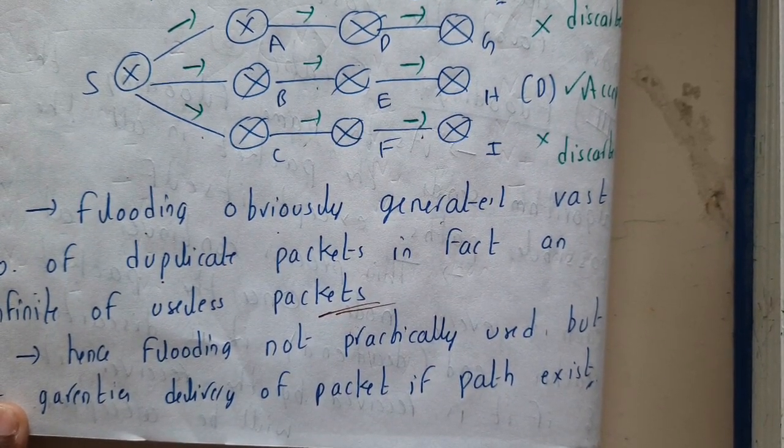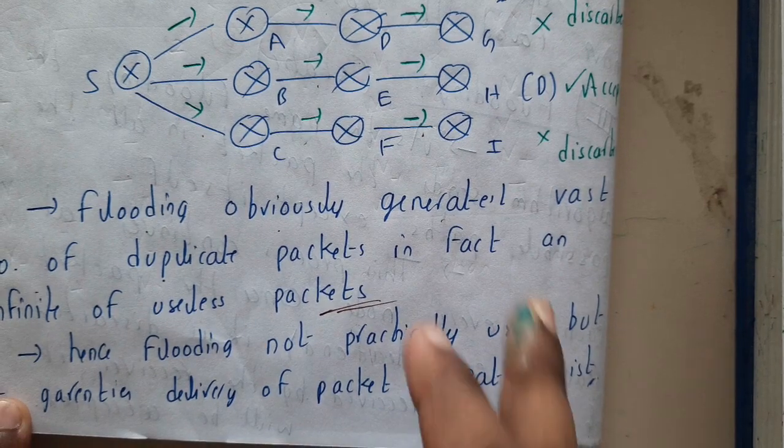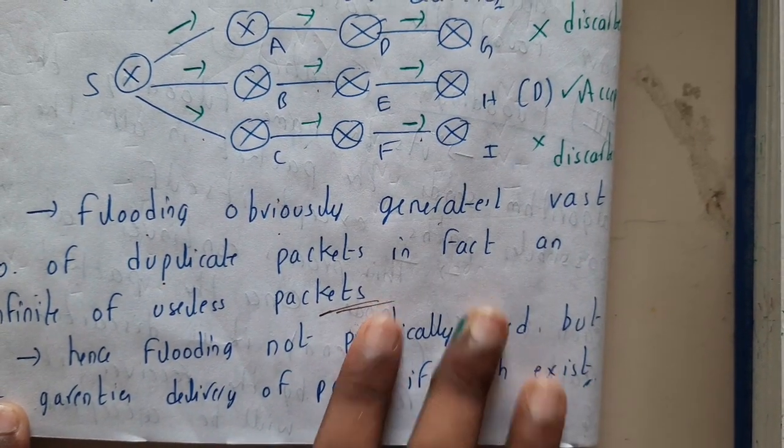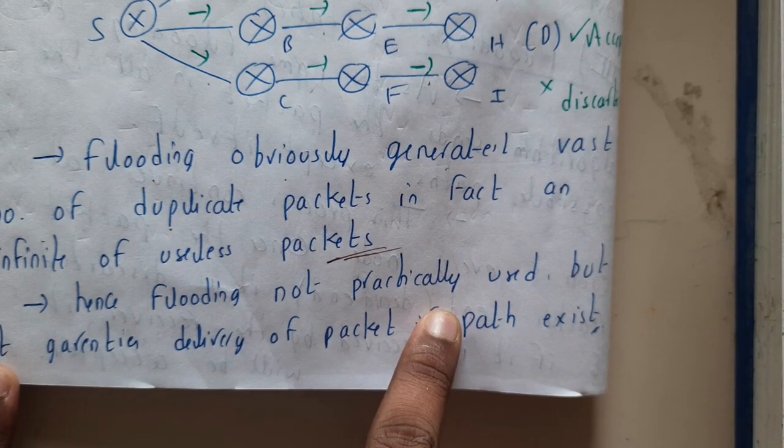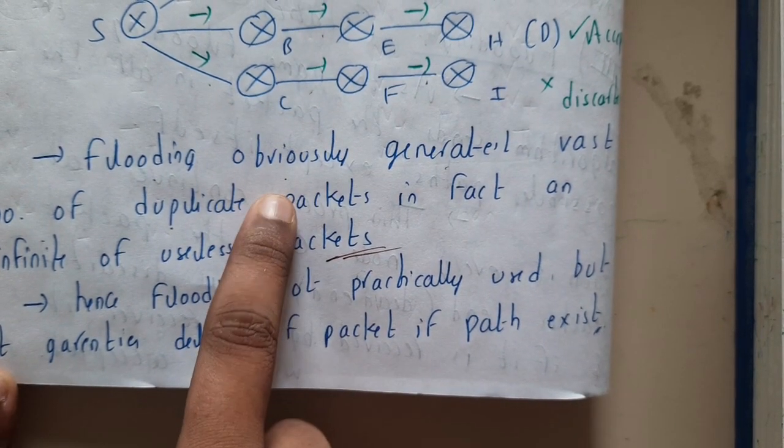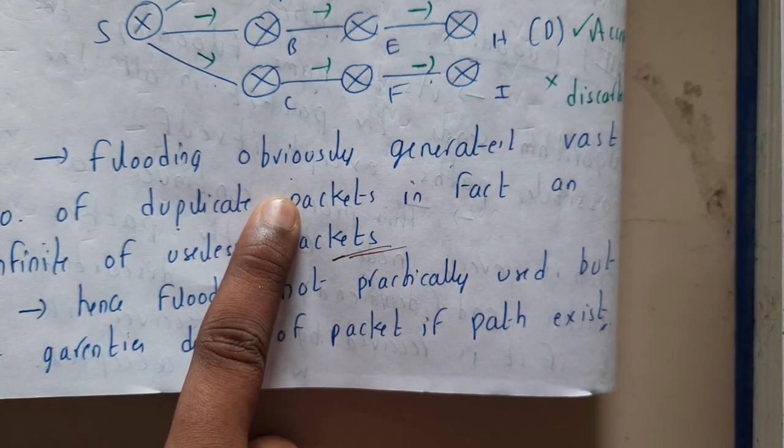In that, thousands or millions of packets will be wasted if we follow this flooding. Hence flooding is not practically used due to this drawback of existing multiple or duplicate items.